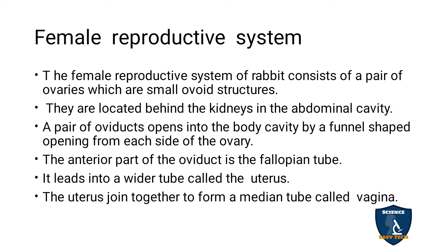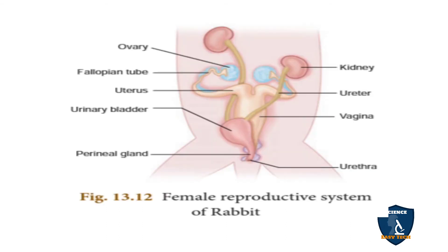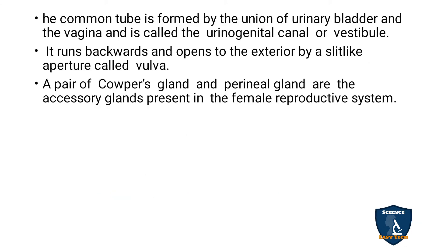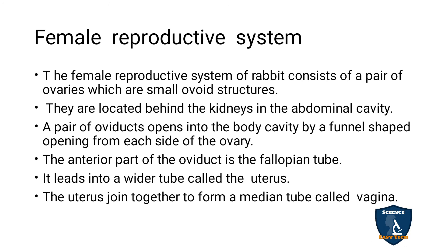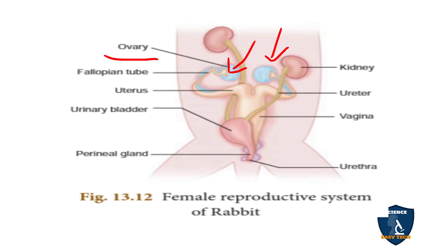Next is the female reproductive system. A pair of ovaries are present; they are small, ovoid structures situated behind the kidney in the abdominal cavity. There is also a pair of oviducts, which have a funnel-shaped opening.